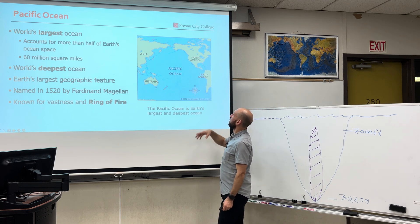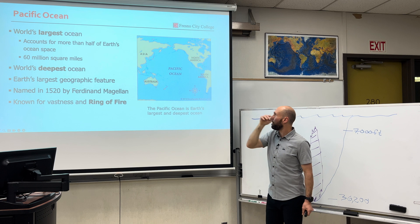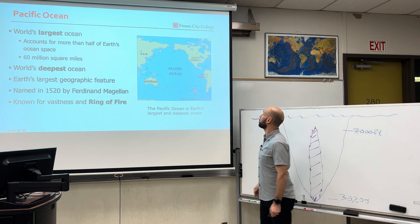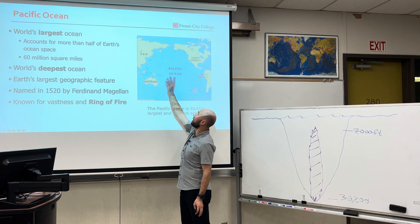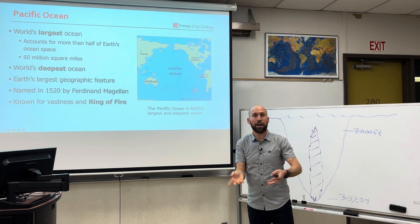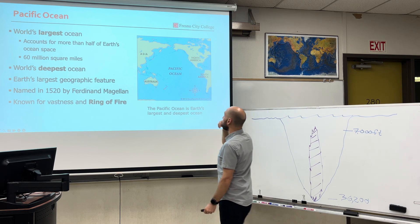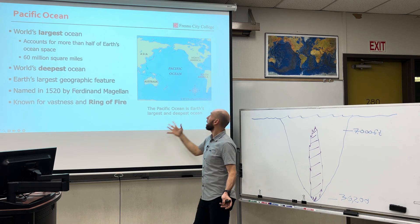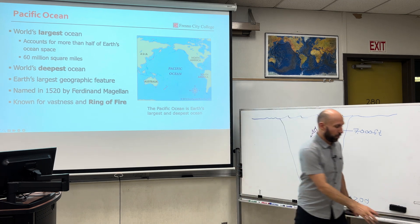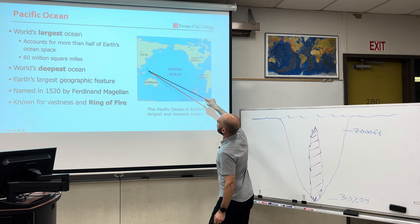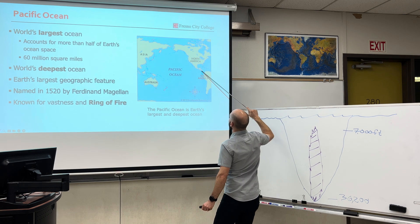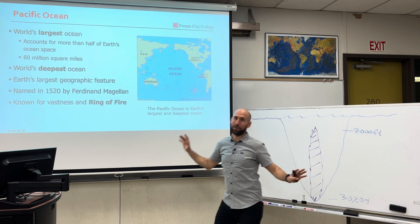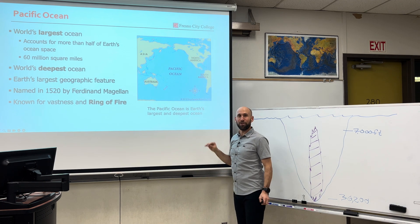The Pacific Ocean encompasses the largest amount of area — about 50% of the world's oceans is the Pacific Ocean. It accounts for half of the ocean water. To the west of the Americas, to the east of Australia and Asia, it's the world's deepest ocean and the largest single geographic feature — the Pacific Ocean basin. It was named in 1520 by Ferdinand Magellan as he circumnavigated the world. It is known for its vastness and also for the Pacific Ring of Fire, a tectonic boundary with a lot of volcanic activity, volcanoes, and earthquakes.